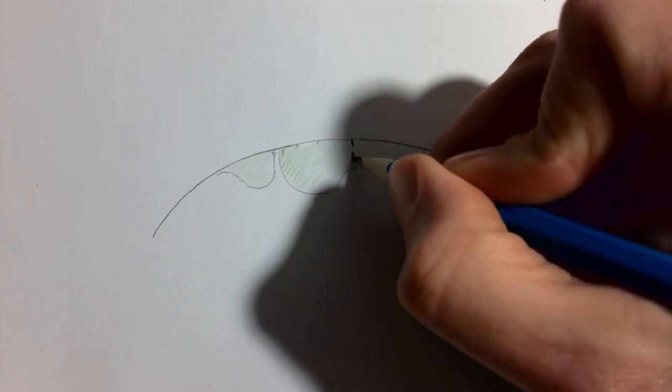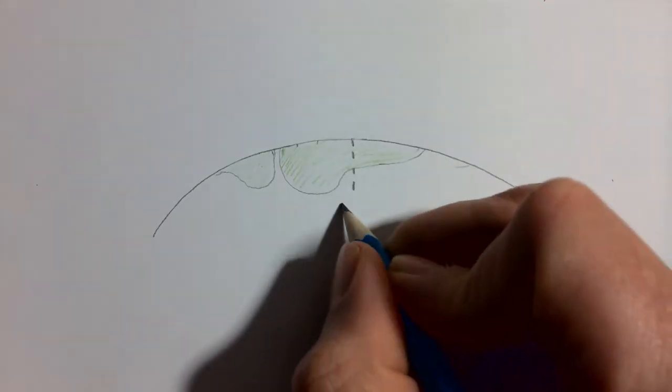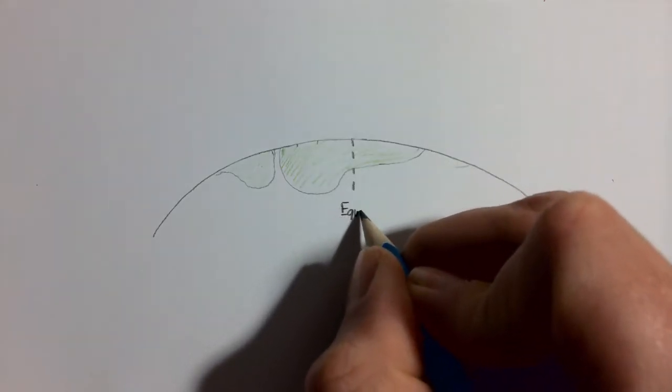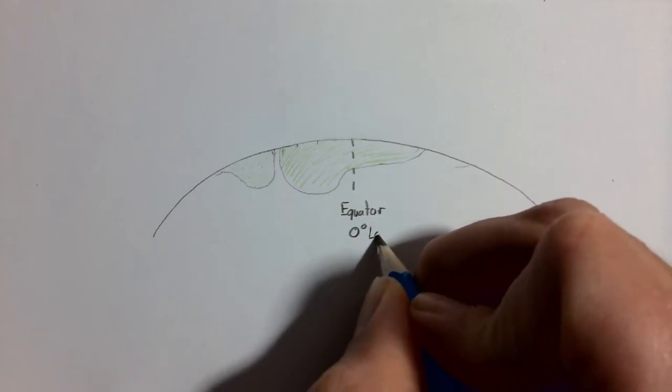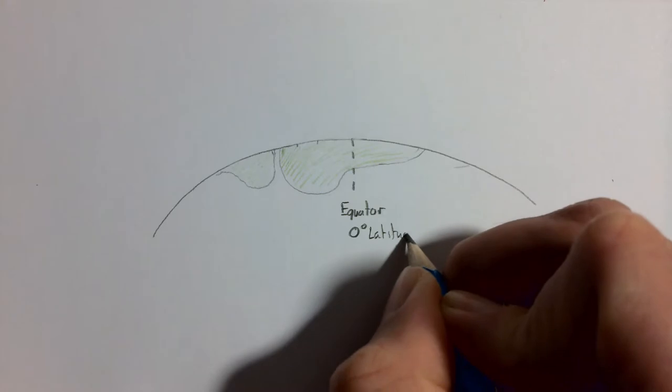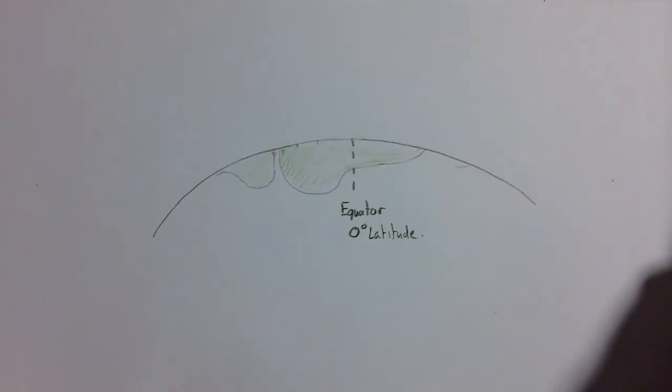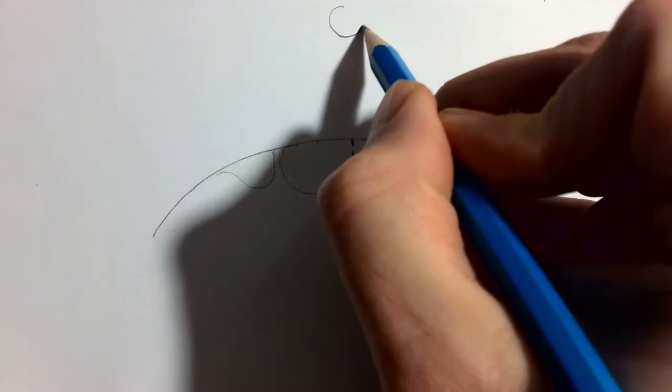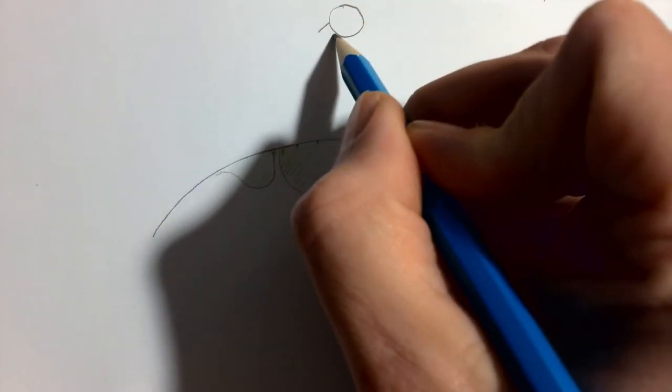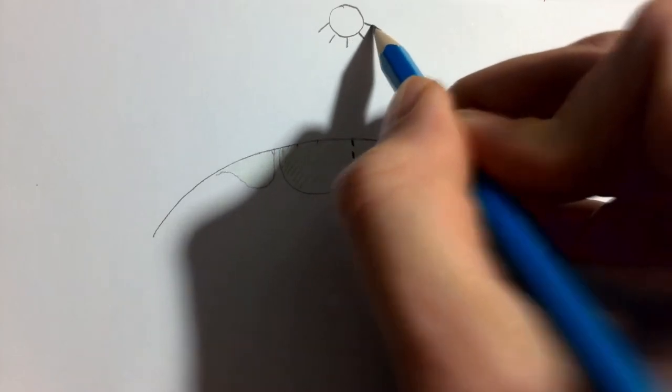This is the equator. That is the line of zero degrees latitude that runs around the middle of our planet. And it is above the equator that the Sun is most intense and hottest.